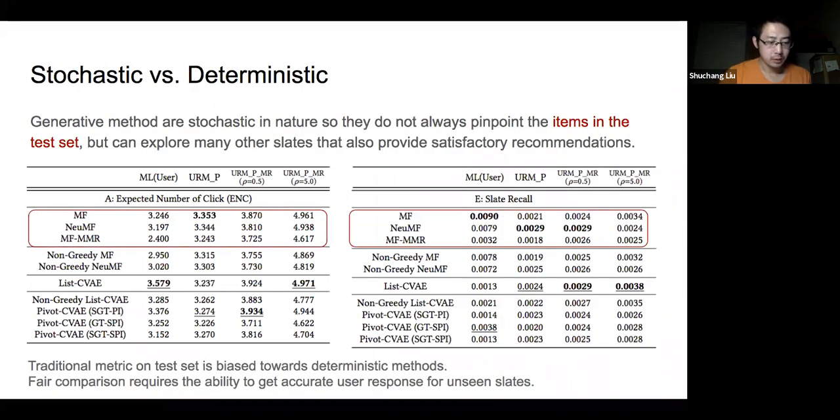In terms of comparison on test set, we notice that stochastic models do not always pinpoint the items in the test set, different from that in a simulation environment. And thus, this will let the generative model perform worse on traditional metrics that only depends on the test data. However, if given a user response model or an online setting that can tell how user reacts to unseen slates, generative models can more effectively explore the various slates providing more satisfactory output.